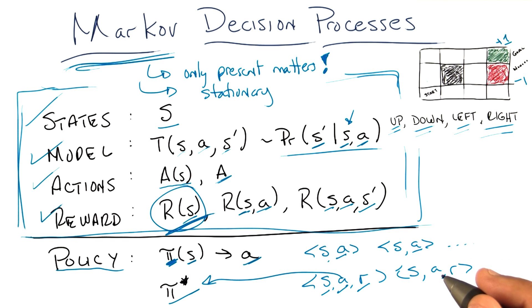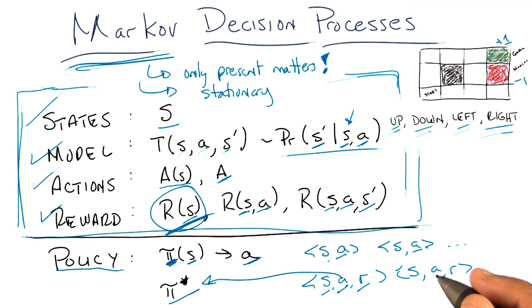So pi star is being the f from that previous slide? Right. And r is being z? Yes. And y is being a, and s is being x. Gotcha.